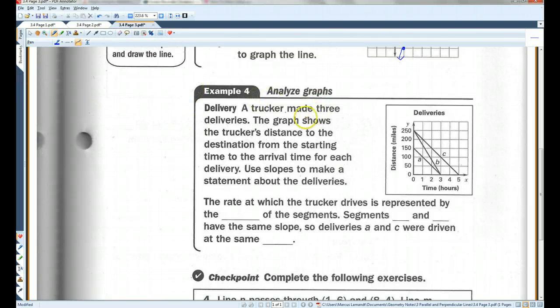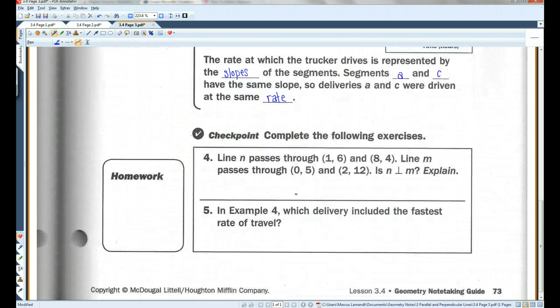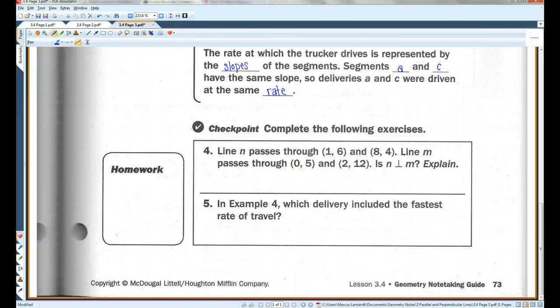A trucker has made three deliveries. The graph shows the trucker's distance to the destination from the starting time to the arrival time for each delivery. Use the slopes to make a statement about the deliveries. So, here's our graph. The rate at which the trucker drives is represented by the slopes of the segments. Segments A and C, notice how A and C are parallel. They have the same slope. So, deliveries A and C were driven at the same rate. I'll let you guys do these two. And that's all.